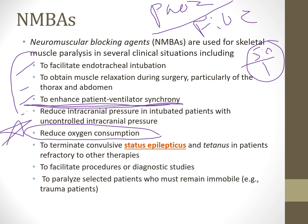Additional indications include terminating convulsive status epilepticus or tetanus, procedures or diagnostic studies to help patients from harming themselves, and keeping trauma patients immobile. There is a dose-related response, especially with IV administration — we can titrate how much paralysis we want. We use a train-of-four to assess how much paralytic is on board, and you need to know the train-of-four for board exams.